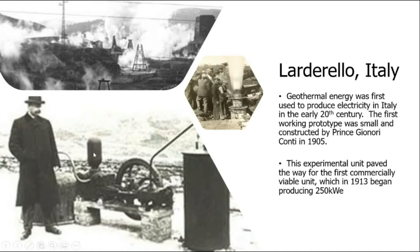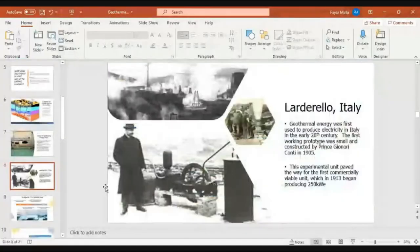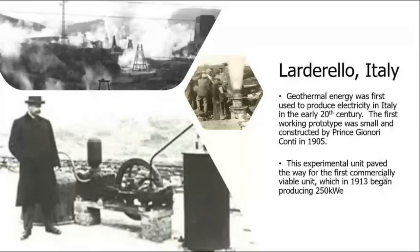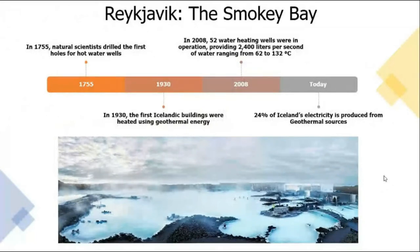The first prototype was made by Prince Piero Ginori Conti in 1905. He built a prototype, which was then applied — producing 500 kilowatts of energy. In 1913, the first commercial unit was made. A gradual technological trend followed from 1755 to today — starting from using water wells for bathing and cleaning, and gradually moving toward electricity conversion.